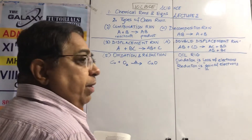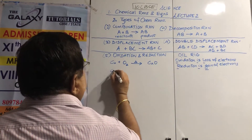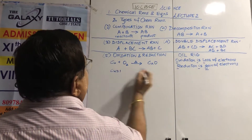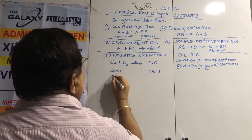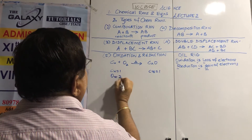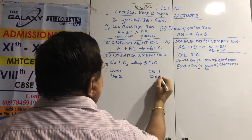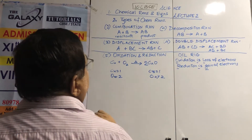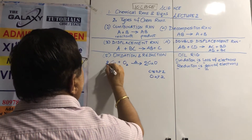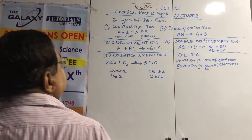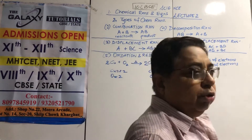To balance 2Cu + O2 → 2CuO: copper is 1 on the left, 1 on the right — leave it. Oxygen is 2 on the left, 1 on the right — put a 2 before CuO. Now copper on the left must be 2 also — put 2 before Cu. Balanced: 2Cu + O2 → 2CuO.